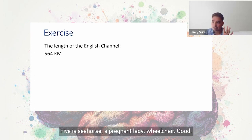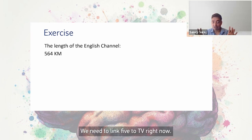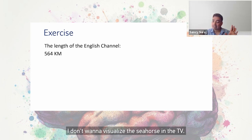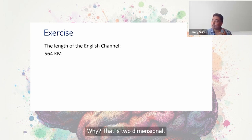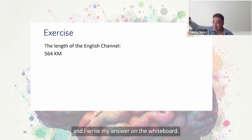The answer is 564. What do I do when I have numbers? Five is a seahorse. If we use a ruler, then a T, then a TV, we need to link five to TV. Right now on the TV I have a seahorse — but I don't want to visualize the seahorse just in the TV because that's two-dimensional.